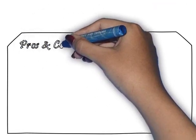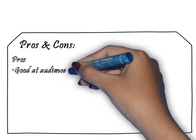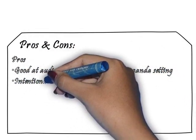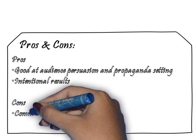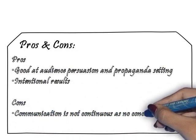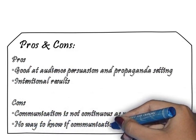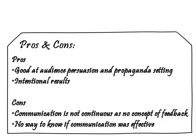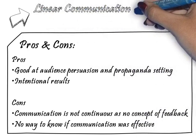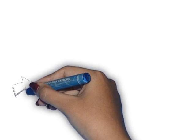For the pros and cons of the linear communication model: it is good at audience persuasion, commonly used during election time and in advertising. It has an intentional result. On the other hand, communication is not continuous, there is no concept of feedback, and there is no way of knowing the receiver of your message.